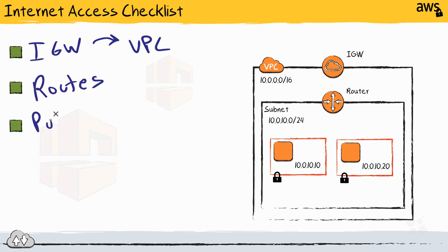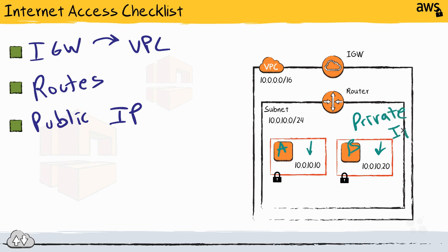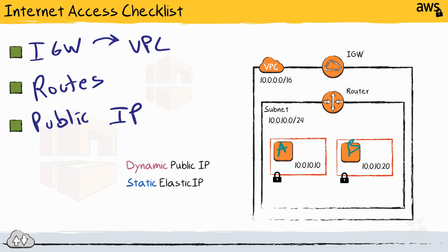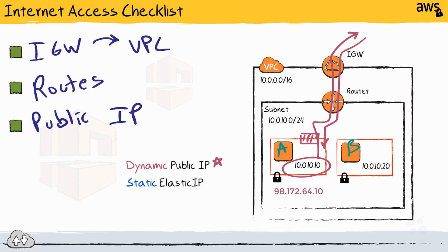The next item on the checklist is: do we have a public IP address assigned to the instances that want to access the internet? Instances A and B have IP addresses assigned, but keep in mind these are private IP addresses — non-internet-routable addresses. They work fine for talking to instances within the subnet or VPC, but they're not sufficient for use on the internet. AWS supports a couple of different public IP addressing options. The first is a dynamic public IP address — instance A could use that to send requests to the internet and receive replies back.